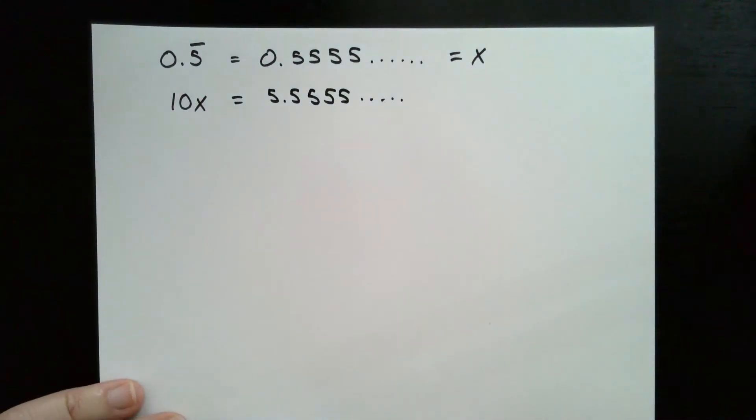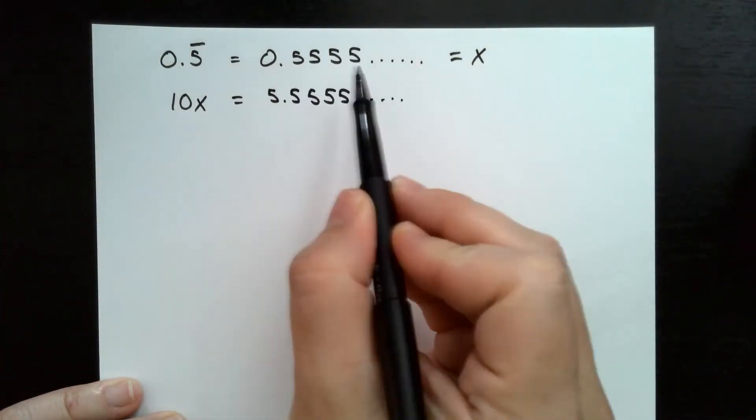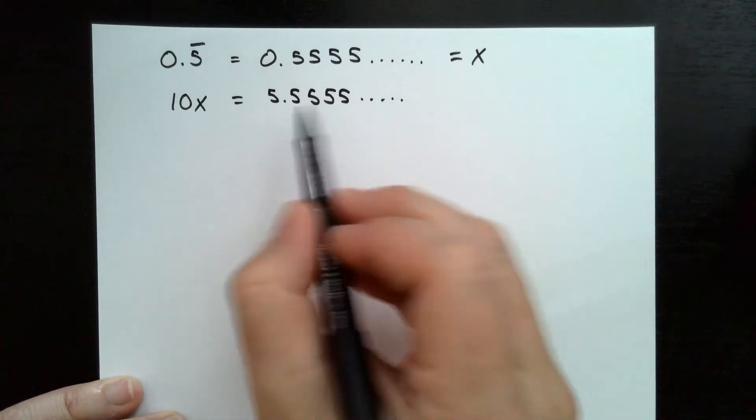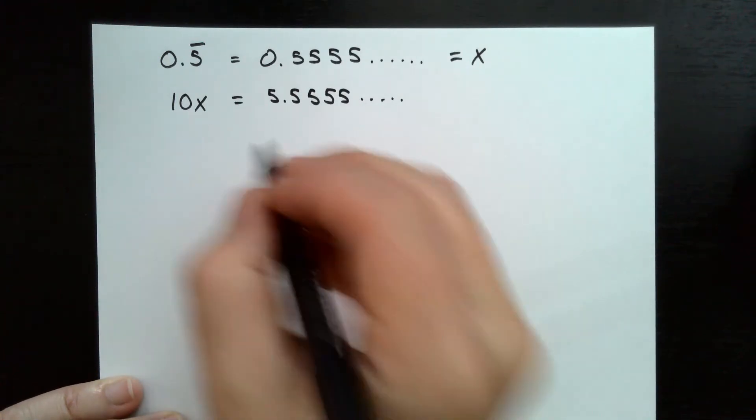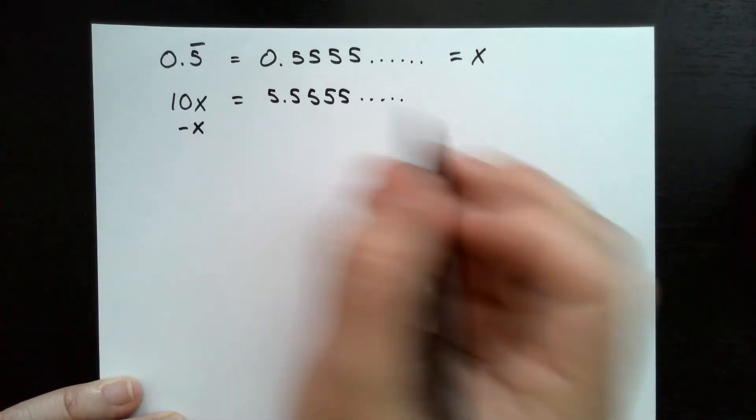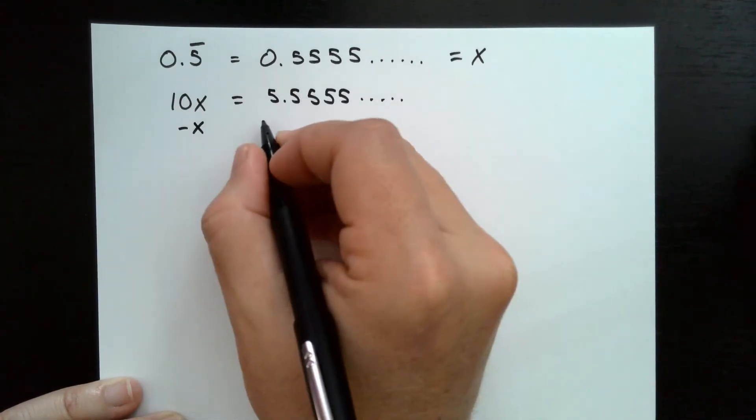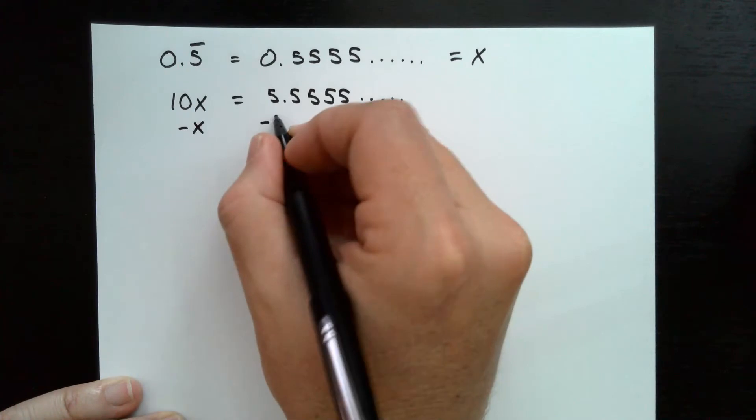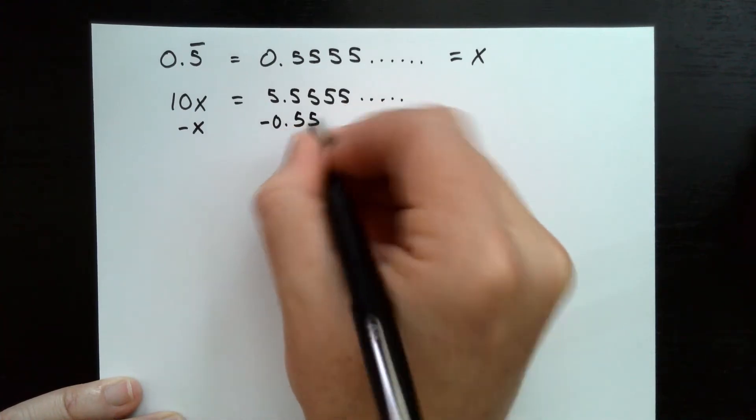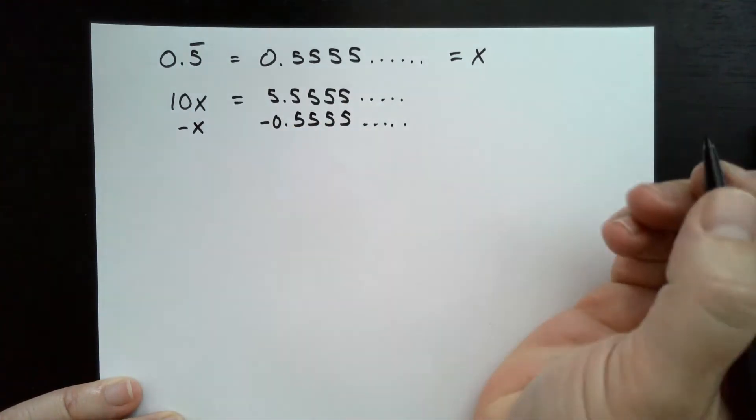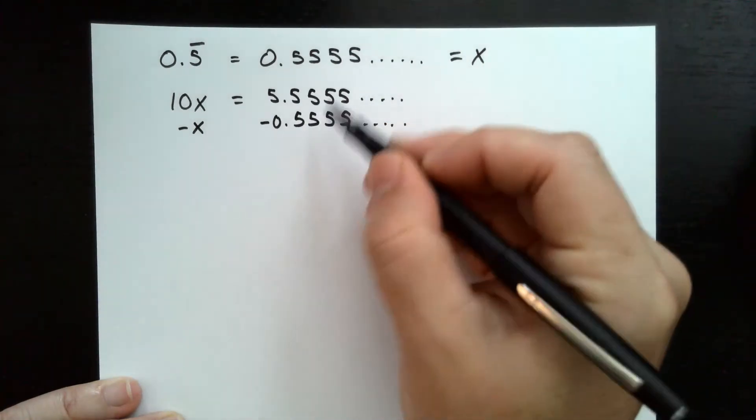Now what I'm going to do, since I know that x is equal to this and I want to get rid of all the decimal, I can subtract x from both sides, which x is this. So what I'm actually subtracting from the right side is 0.5555 repeating. So all these disappear.